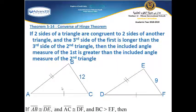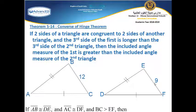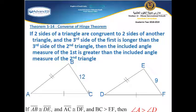Here we have two triangles with two congruent sides each. The third side BC is 12 and the third side EF is 9. Then the opposite angle to BC is bigger than the opposite angle to EF. So angle A, opposite to the larger side BC (12), is bigger than angle D, opposite to the smaller side EF (9).